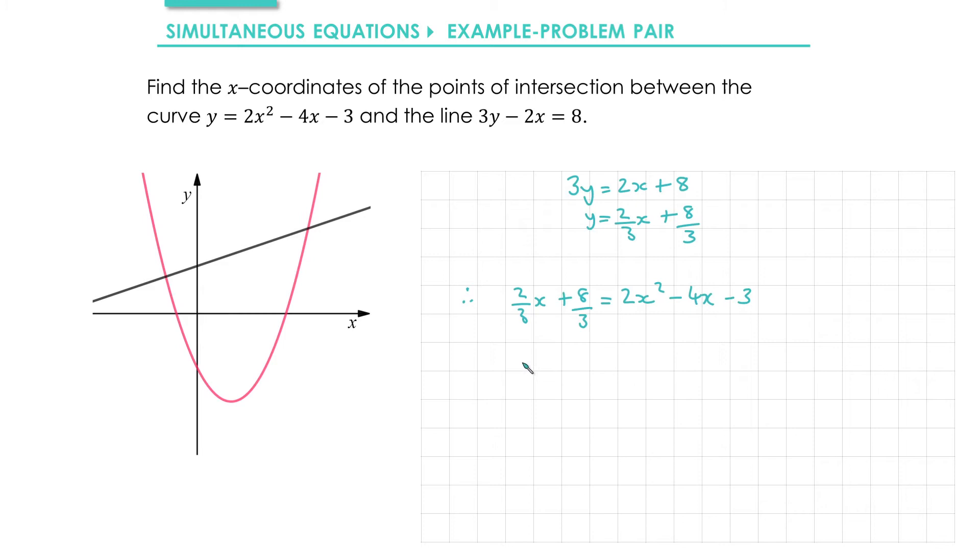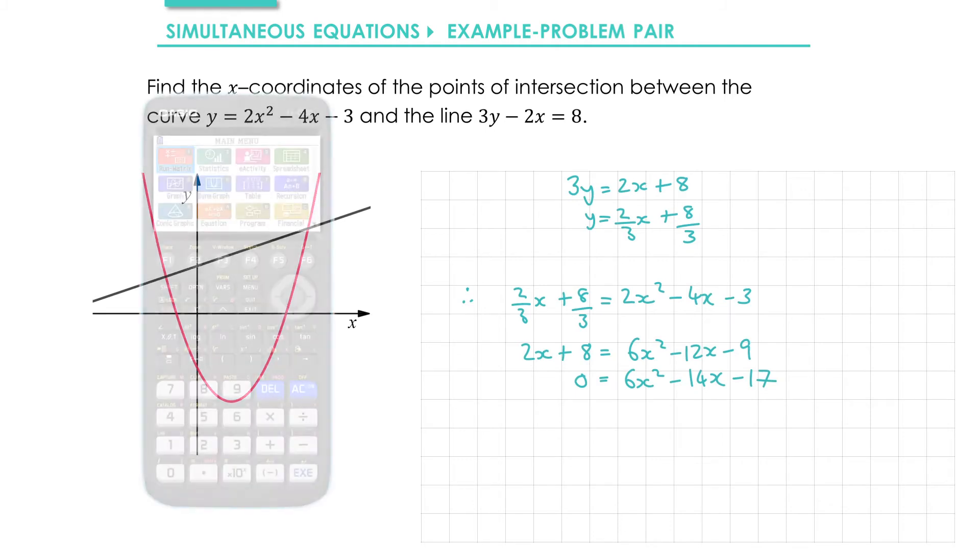To make things simpler I'm going to multiply both sides by 3. That will clear out the fractions leaving 2x plus 8 equals 6x squared minus 12x minus 9. Then I'll subtract 2x plus 8 from both sides to get 0 equals 6x squared minus 14x minus 17. From here I'm going to use the quadratic solver on my calculator.